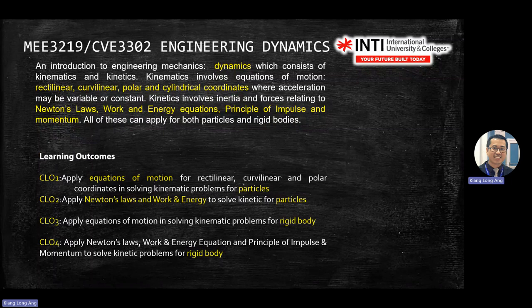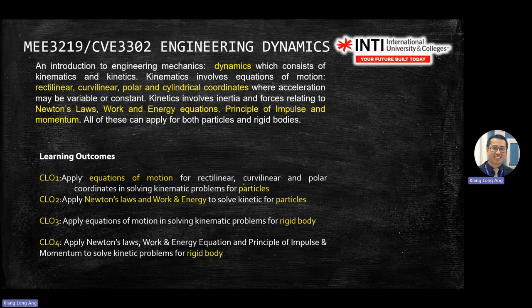There are four learning outcomes for this module. This is important because this is how we design questions for Test 1, Test 2, and the final exam. The first learning outcome (CL1) covers equations of motion for particles. CL2 covers Newton's laws and the energy principle for particles.